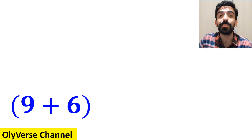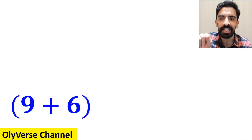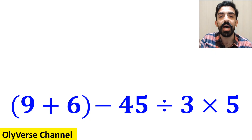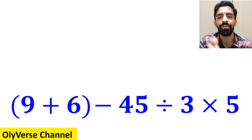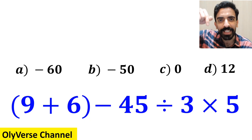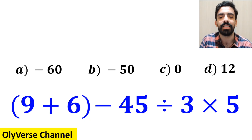What is the value of the expression (9 plus 6), then minus 45, divided by 3, multiplied by 5? Which option do you think is the correct answer to this question?